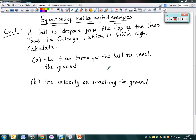So the Sears Tower in Chicago is 400 meters high and a ball has dropped from the top of that tower. Two things to calculate: the time taken for the ball to reach the ground and its velocity on reaching the ground.